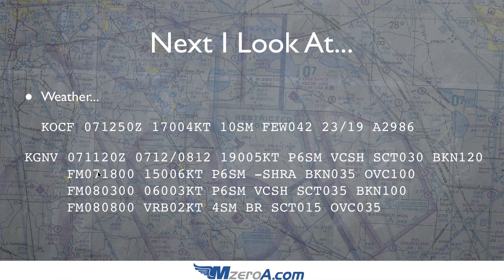Let's look at the TAF for an airport just north of us, the Gainesville Airport. Reading through this TAF — everything's looking good, greater than six visibility. Until we get to some showers in the vicinity. They're showing scattered at 3,000. In fact, later on at 1800 Zulu, that scattered layer is becoming a broken layer at 3,500 feet. So now I'm thinking, am I really going to be able to do this flight at 3,500 feet like I planned? Because I do have my VFR cloud clearance and visibility requirements — I've got my visibility — but can I stay 500 feet below those clouds and still maintain my VFR cruising altitude?